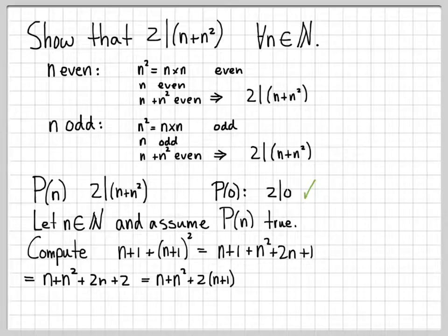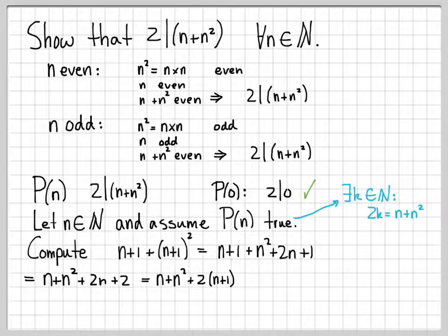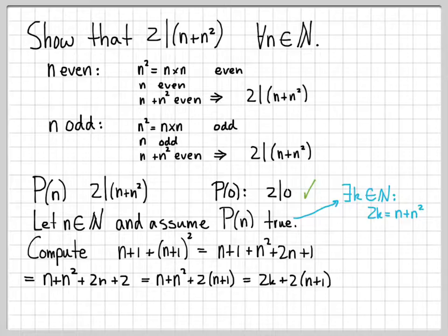So far, all I'm doing is a computation. Now I'm going to use my assumption — I'm assuming that P of n is true. What does it mean to assume P of n is true? It means that n plus n squared is divisible by two, which is equivalent to saying there exists some k in the natural numbers such that two times k equals n plus n squared. Since I'm assuming this is true, I can make this algebraic substitution and replace n plus n squared with two k. I still have my two times n plus one, and now I can factor out the two to write this as two times the quantity k plus n plus one. This is clearly divisible by two — it's two times an integer.